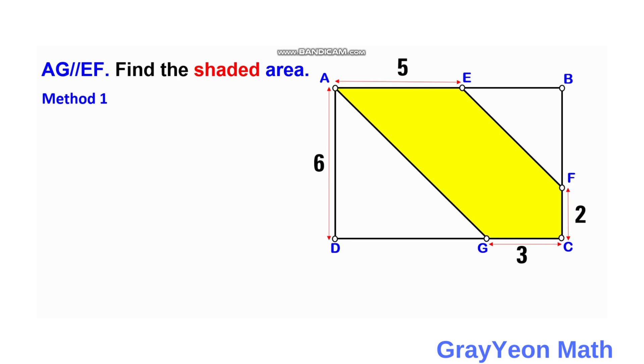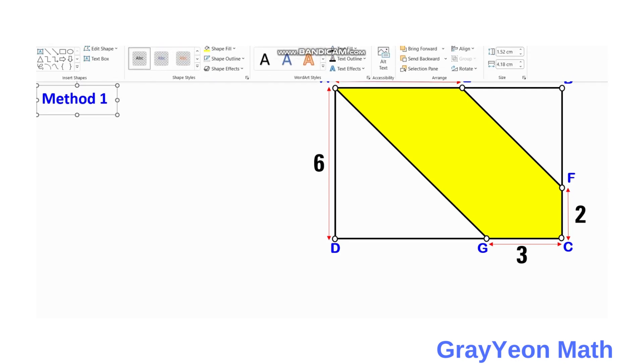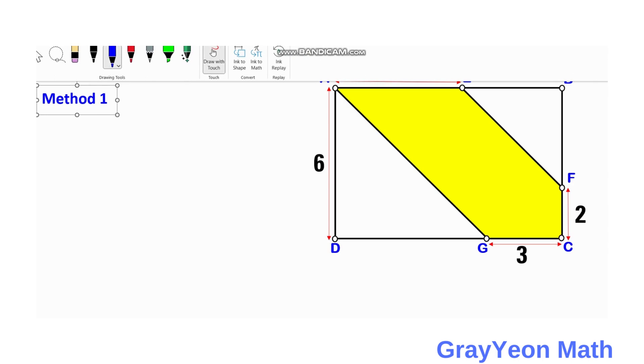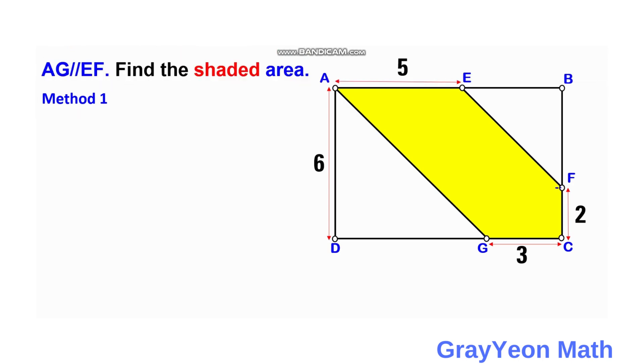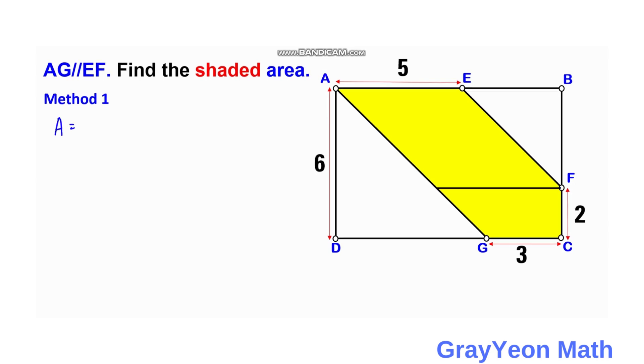For our first method we can actually draw a horizontal line from F until it reaches this segment A, G. And we form two parts, a parallelogram and a trapezoid below. This parallelogram and this trapezoid below. We can label this point as H.